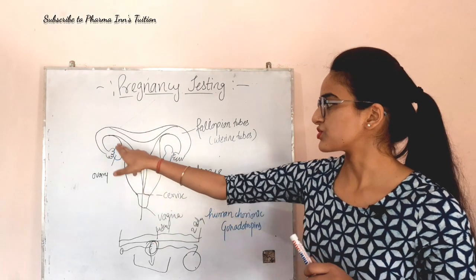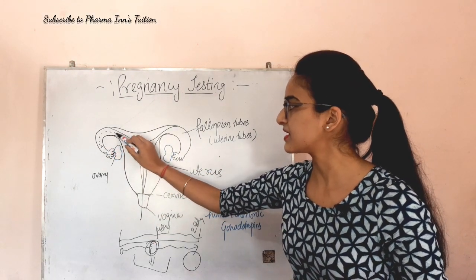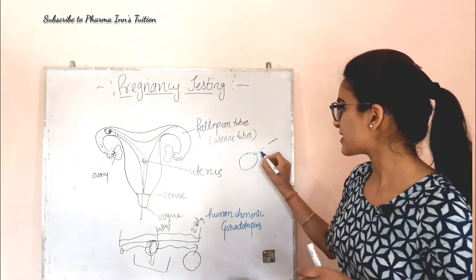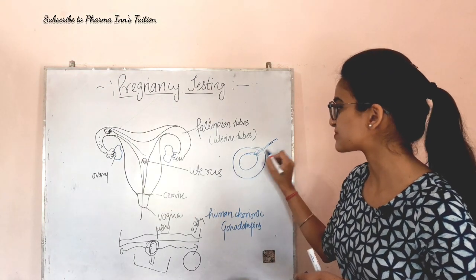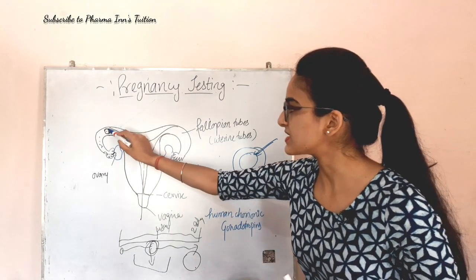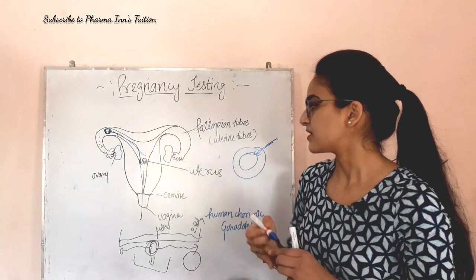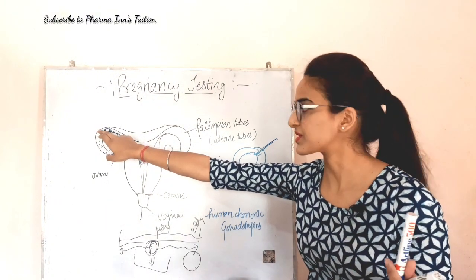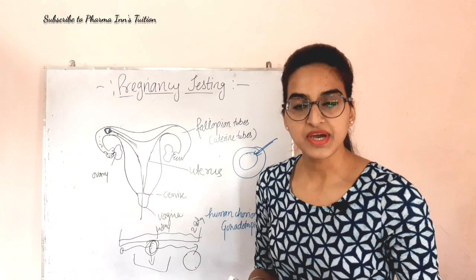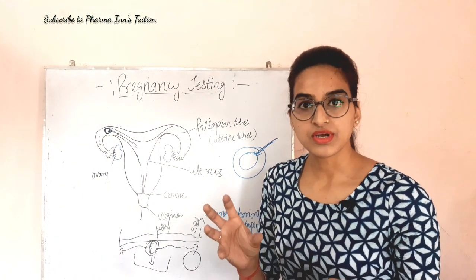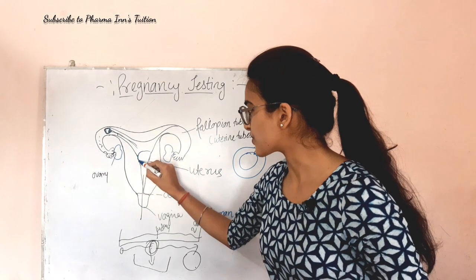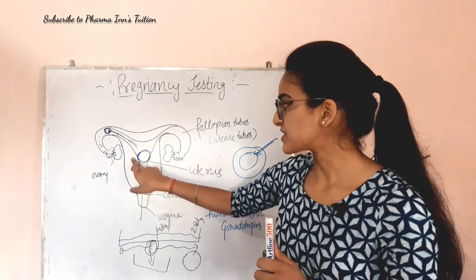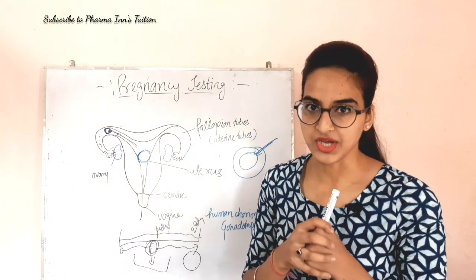When the egg starts to come out of the ovaries, we need the sperm to fertilize it in the fallopian tube. When the egg is fertilized, it will come directly to the uterus. It matures in the fallopian tube and fertilizes before reaching the uterus. After fertilization, it will no longer be called the egg — it is called the fetus. The fetus then adheres to the inner lining of the uterus.